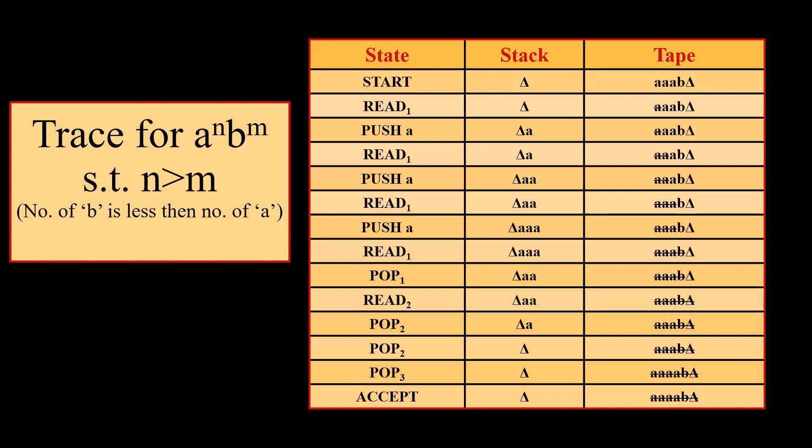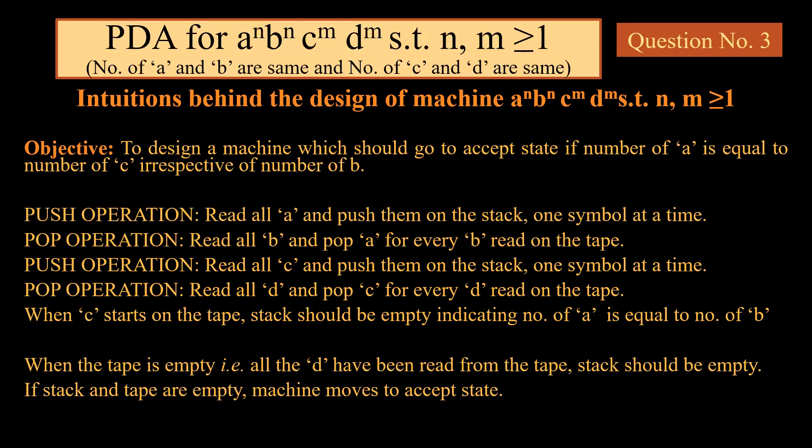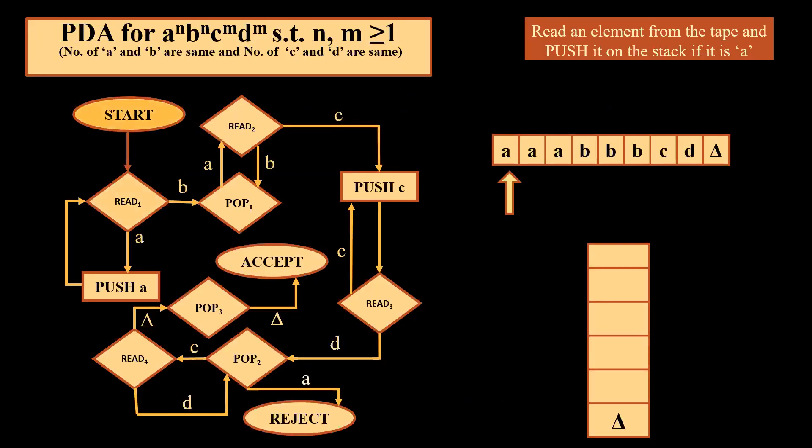Now we move to the third question: aⁿbⁿcᵐdᵐ such that n, m ≥ 1, meaning the number of a's equals the number of b's, and the number of c's equals the number of d's. We push all a's and pop all b's. When we start reading c, the stack should be empty — confirming that the number of a's read equals the number of b's read. Then, just as before, we push all c's onto the stack, and when d is read, we start popping all the c's. When the tape is empty, the stack should also be empty.